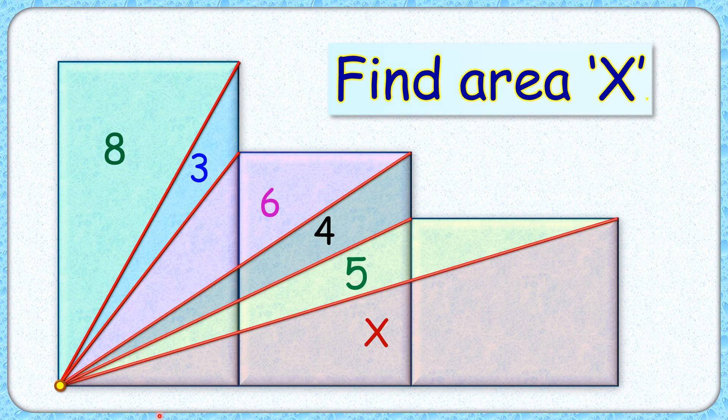Welcome everyone to this interesting question. Three rectangles are placed alongside each other. These rectangles together are divided into six triangles with the help of five straight lines. Out of six triangles, the area of five triangles is given to us. The exciting part is, with this limited data, we have to find the area of the sixth triangle.